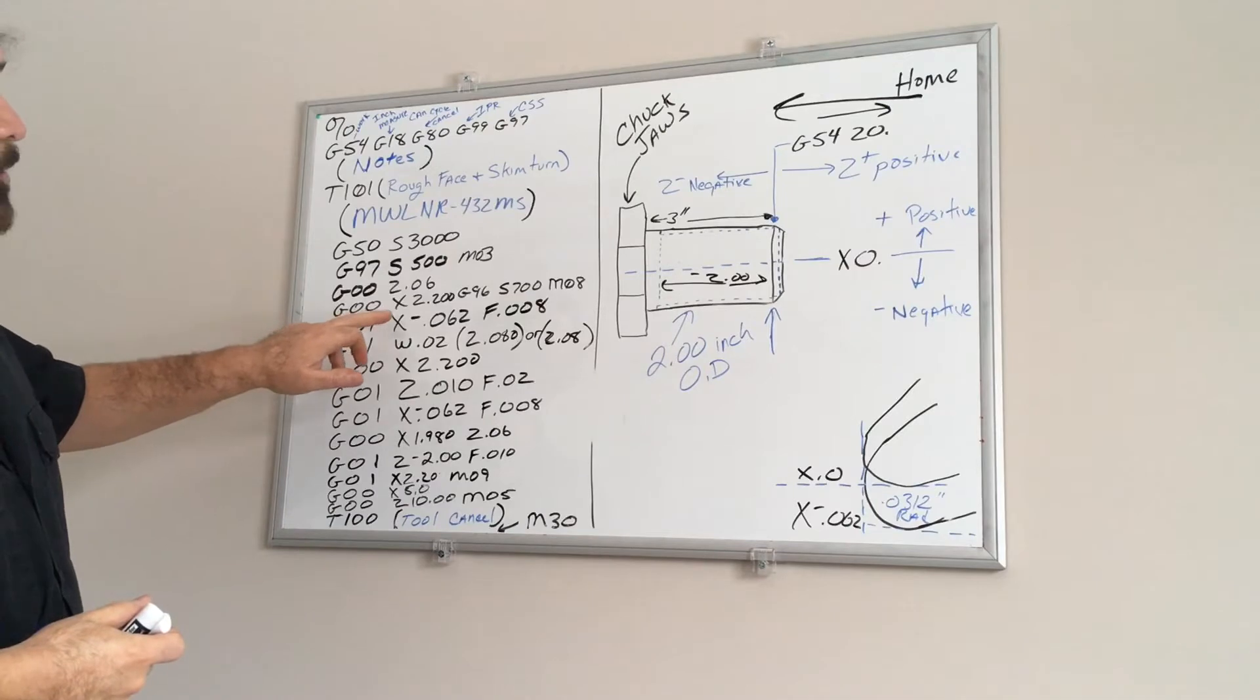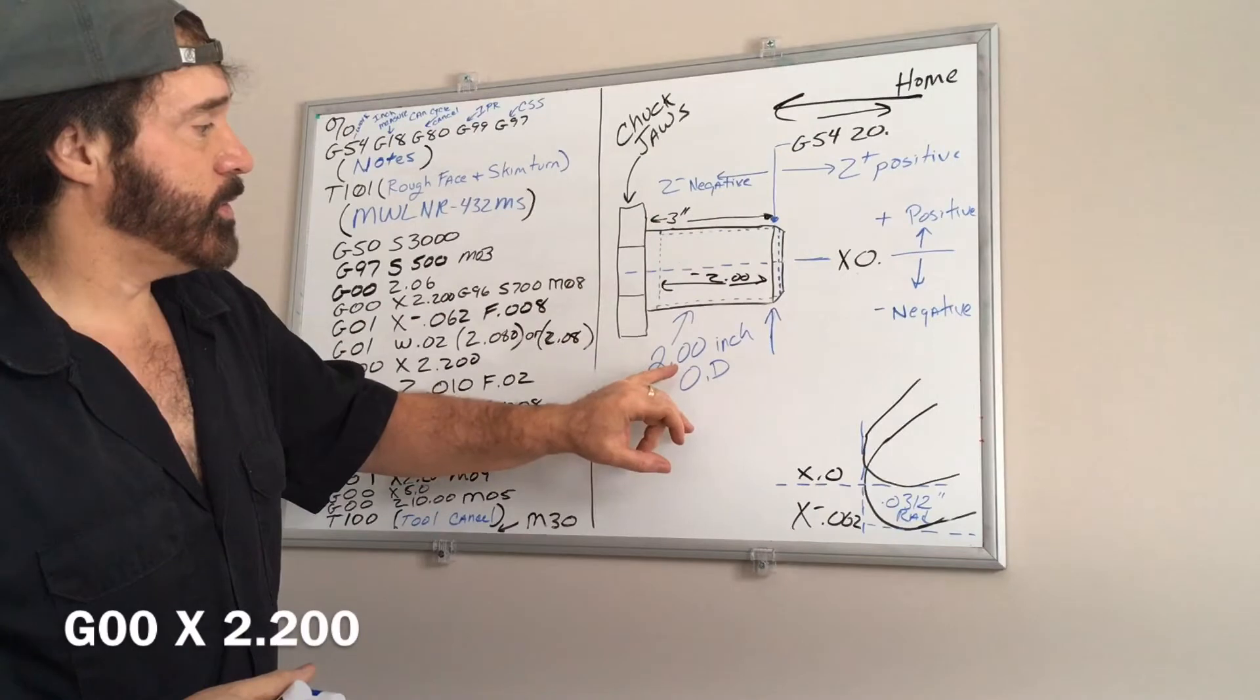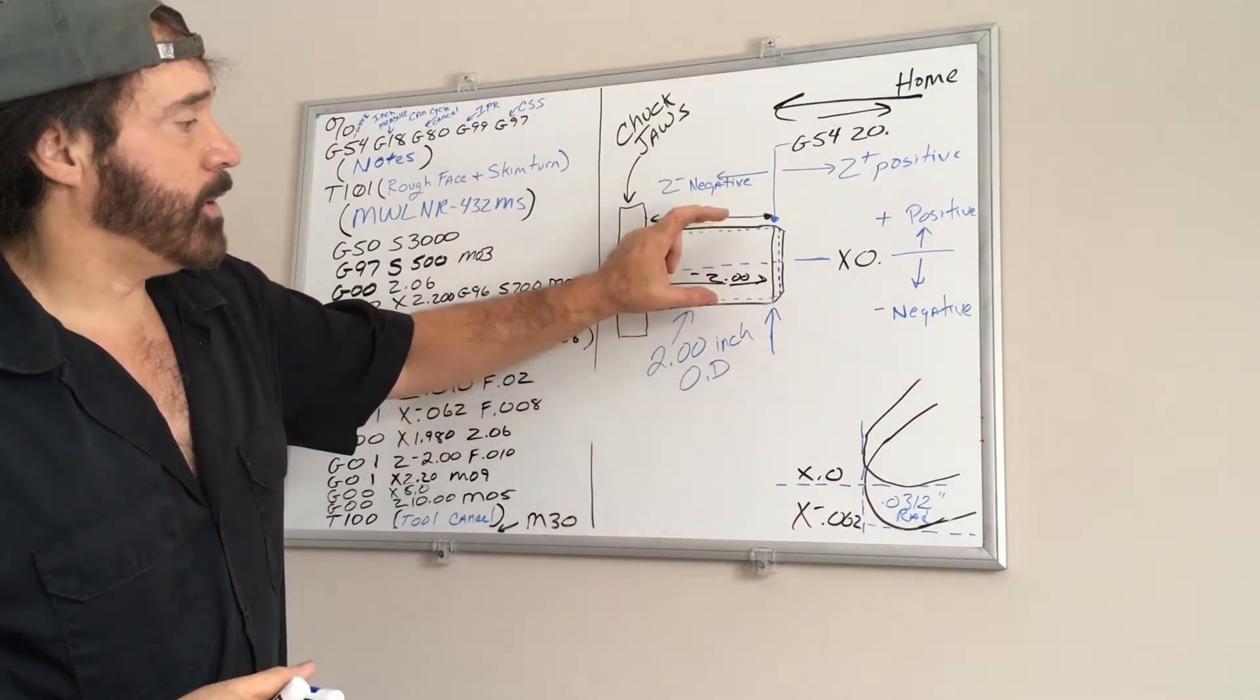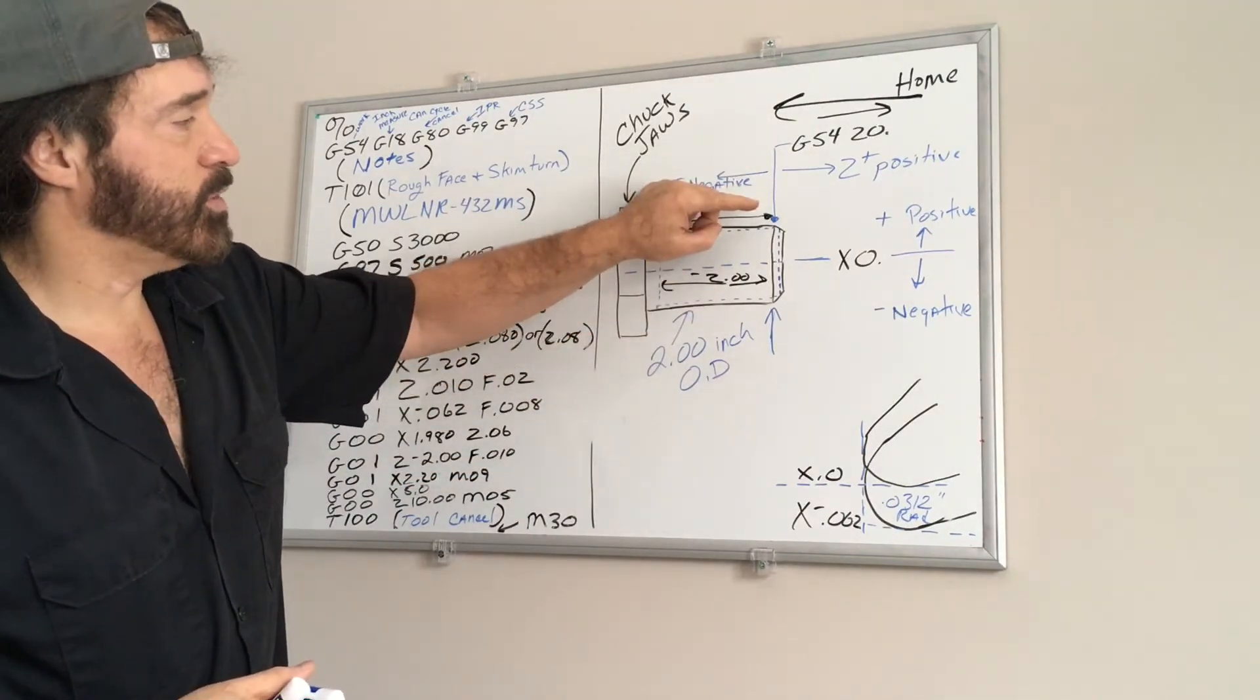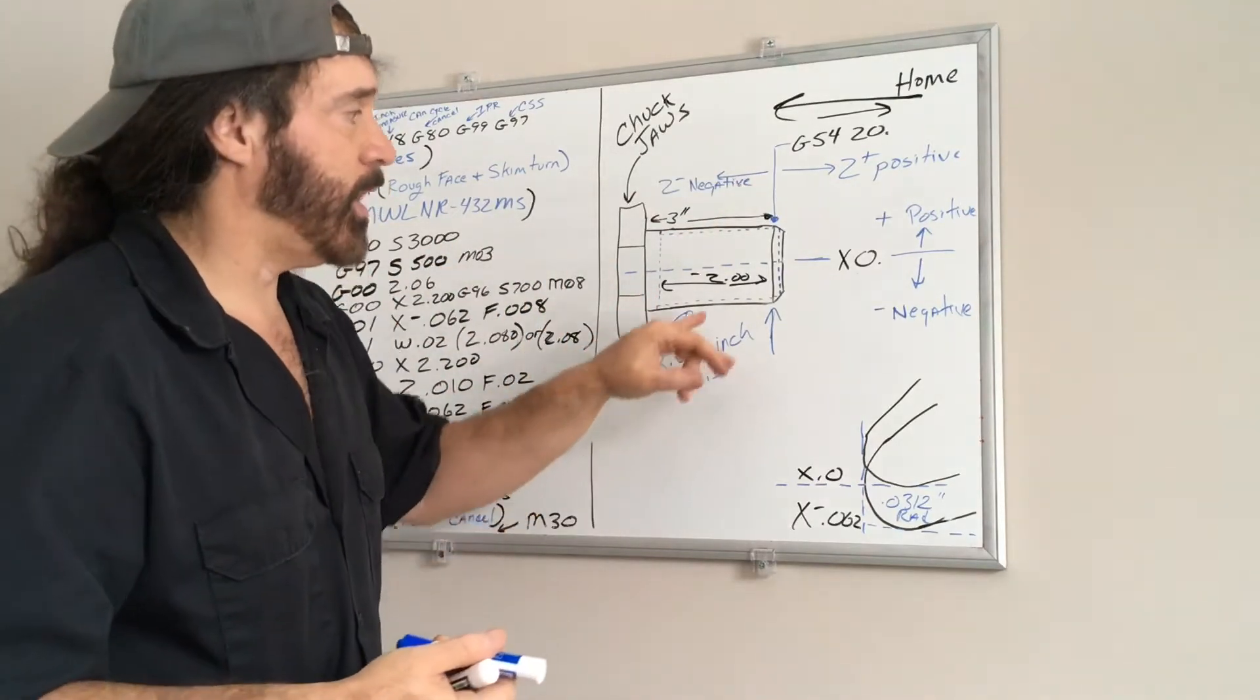So now I'm going to rapid it down to a dimension of X 2.200. So we know the part is 2 inches in diameter, so we're going to come down X 2.2, which means in theory it's 200 thousandths above, but in reality it's only 100 thousandths because everything in X is doubled.